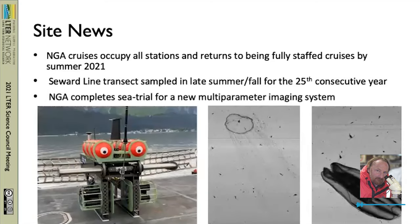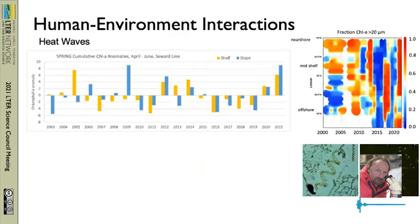We also got a new toy — we completed sea trials on a new multi-parameter imaging system. These are just some examples of the imagery we have coming up that will allow us to examine the fine-scale spatial interactions of physics and biology. So we're starting to synthesize a lot of material now that we have all these extra resources.